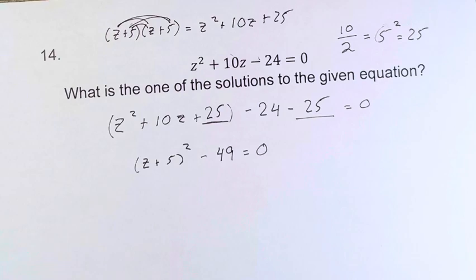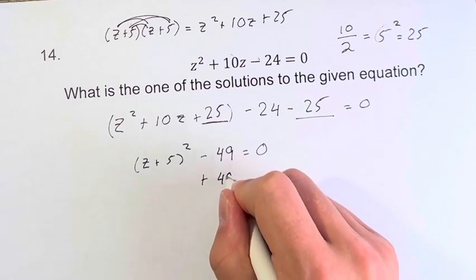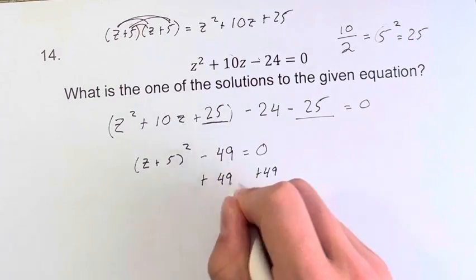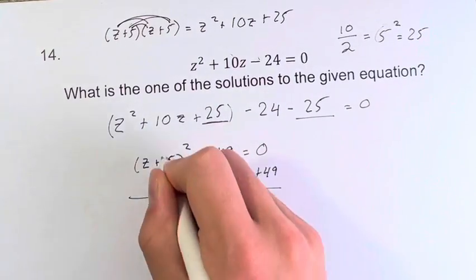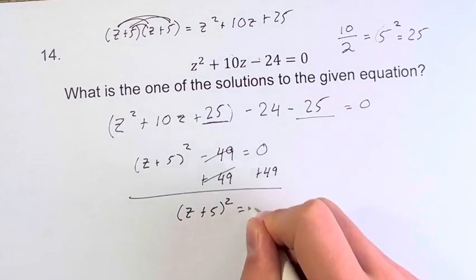And now this is an equation that we can solve a little bit more easily than this original one. We want to get z on its own, so we can add 49 to both sides. This cancels, and we're left with z plus 5 squared is equal to 49.